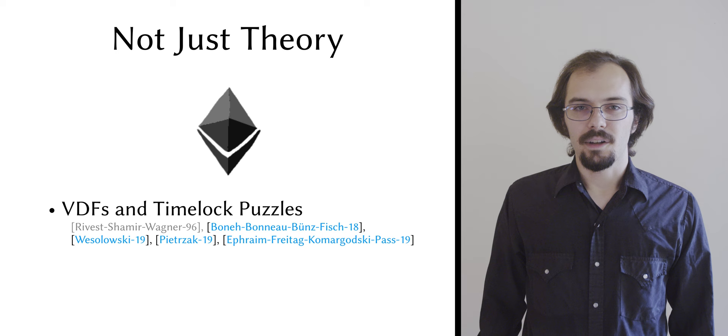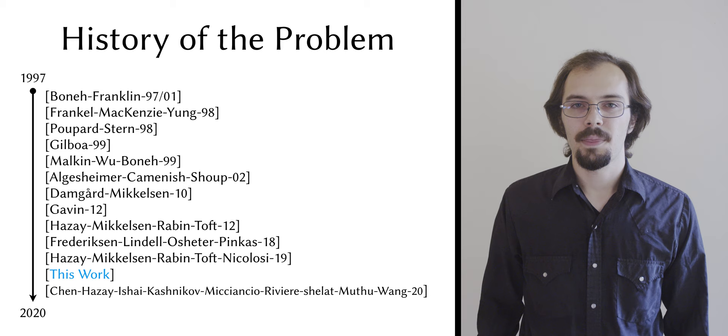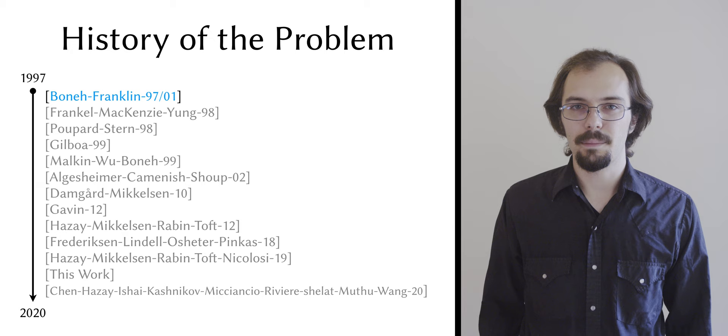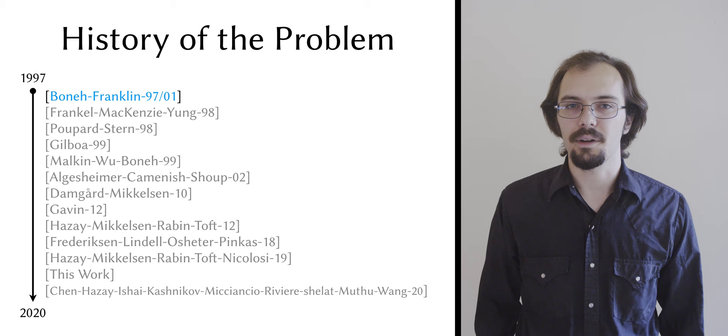It's not surprising to find that the history of secure bi-prime sampling mirrors the history of its applications, a great deal of initial interest and a recent resurgence. Bonet and Franklin wrote the seminal paper on the subject in 1997, and pretty much all of the subsequent works follow their basic layout, including ours.